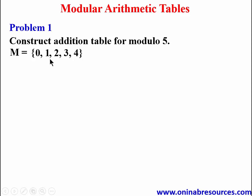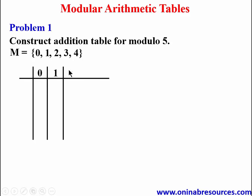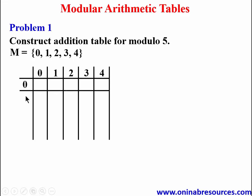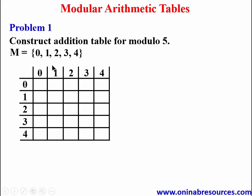Creating the table, these are the numbers we are going to use. We have 0, 1, 2, 3, and 4 on the column and 0, 1, 2, 3, and 4 on the row. The operation, which is addition, is placed inside a circle — remember in modular arithmetic the arithmetic operation is shown within a circle.